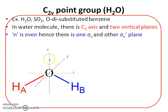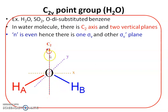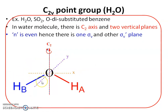There are three axes: Z, X, and Y, all at right angles to each other. The C2 principal axis passes through the center of oxygen parallel to the Z axis. When the molecule is rotated 180° along this axis, hydrogen A exchanges with hydrogen B, giving an equivalent structure.